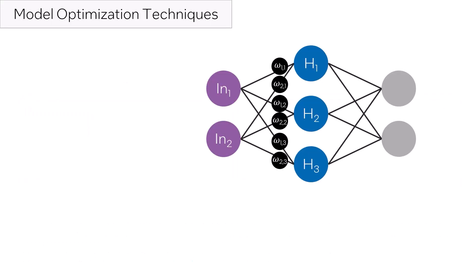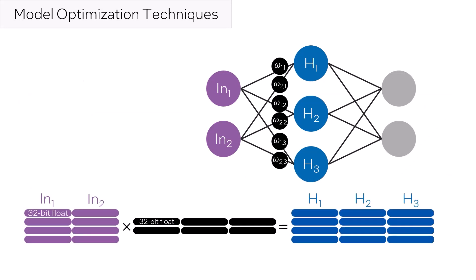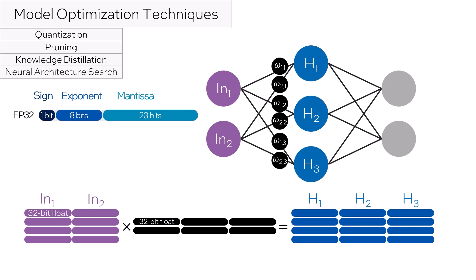There are a few basic ways to optimize a model. Remember, neural networks are dominated by matrix multiply accumulates, typically 32-bit floating point. There are a few main categories of model optimization techniques and we will cover how each reduces either the amount of data, the amount of multiplication operations or both while maintaining sufficient accuracy.